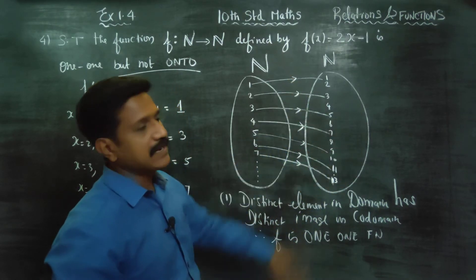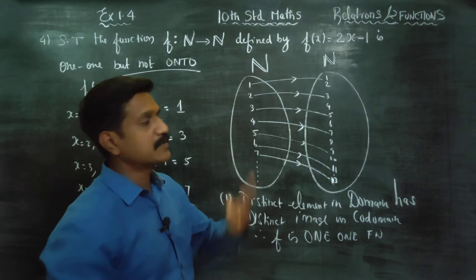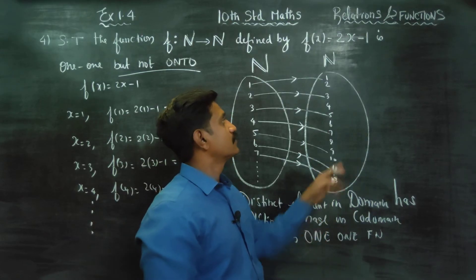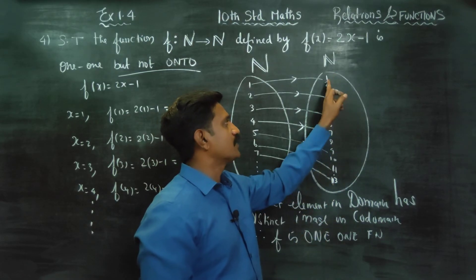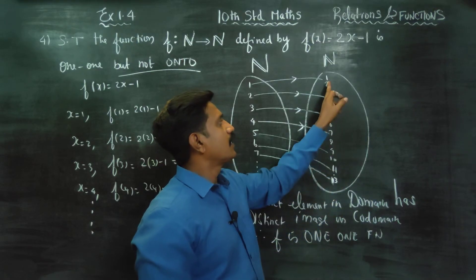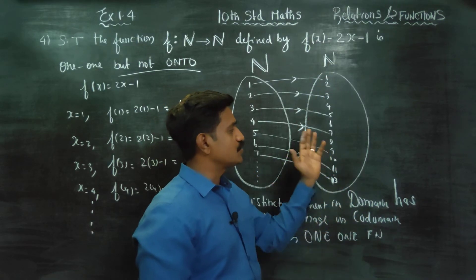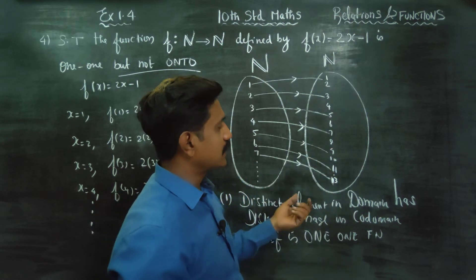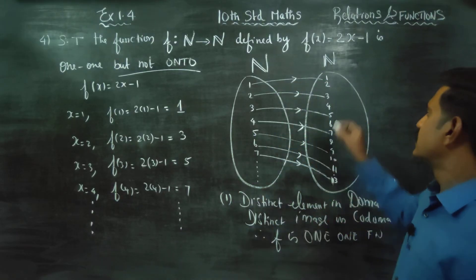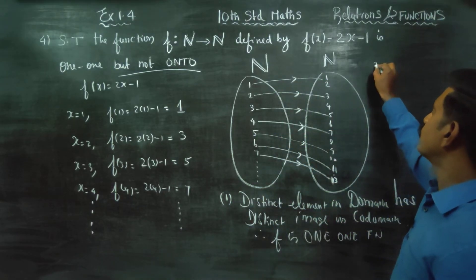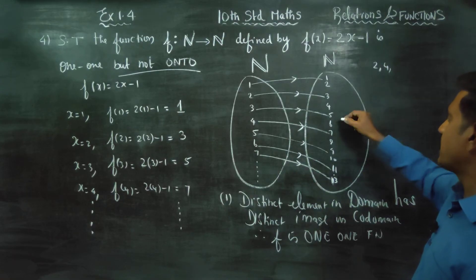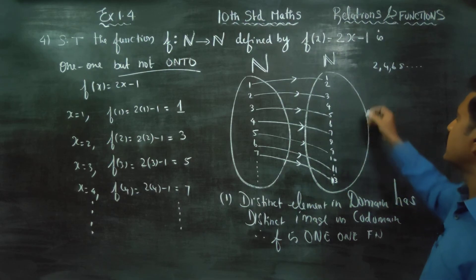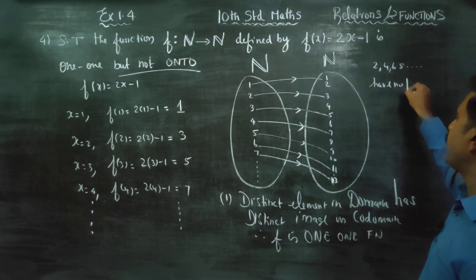The pre-image is not onto. For onto, codomain and range must be equal. If codomain and range are equal, that means the function is onto. But here, the even numbers 2, 4, 6, 8... have no pre-image.